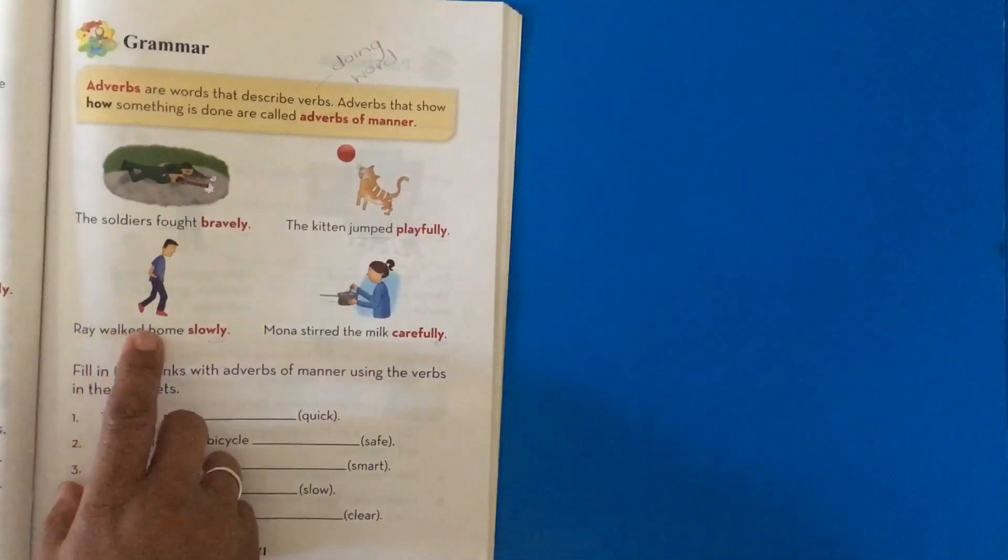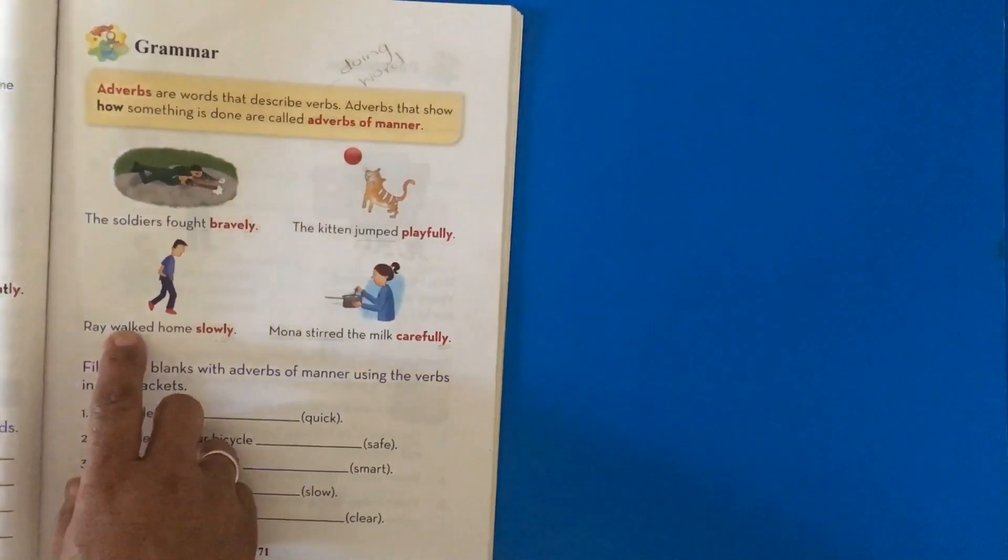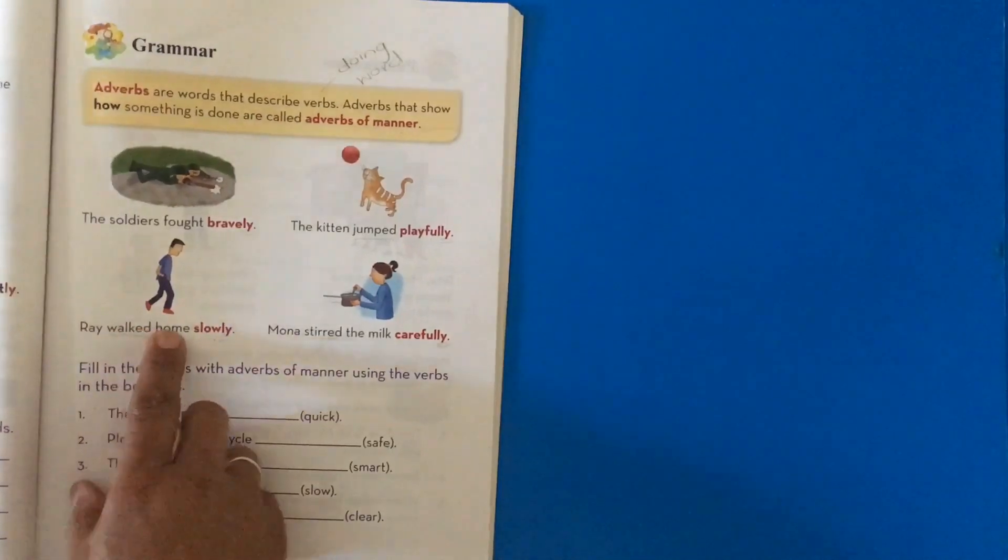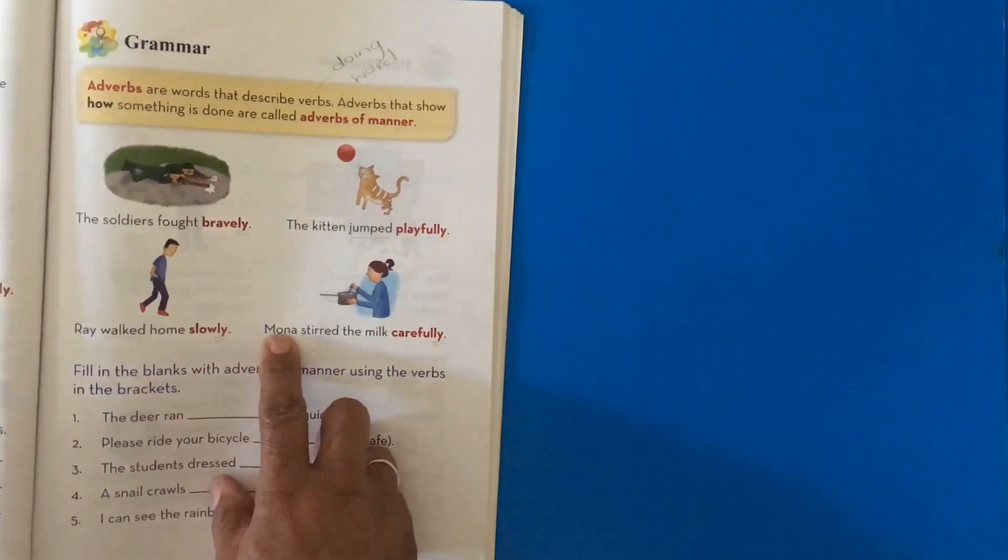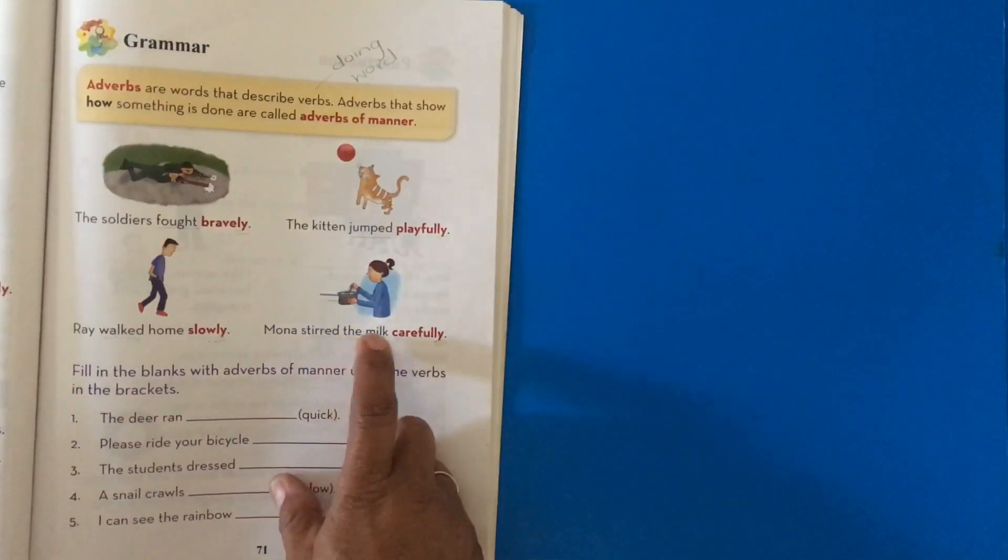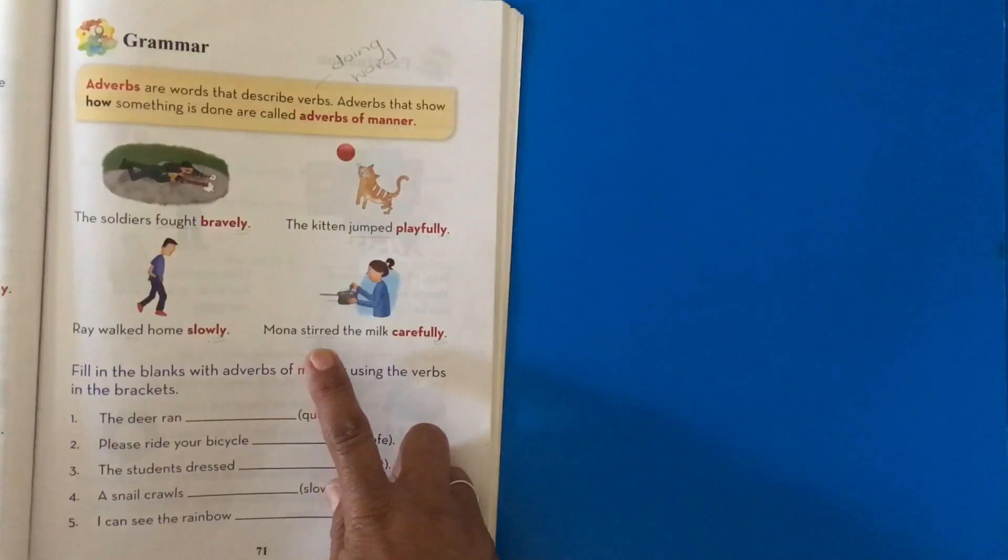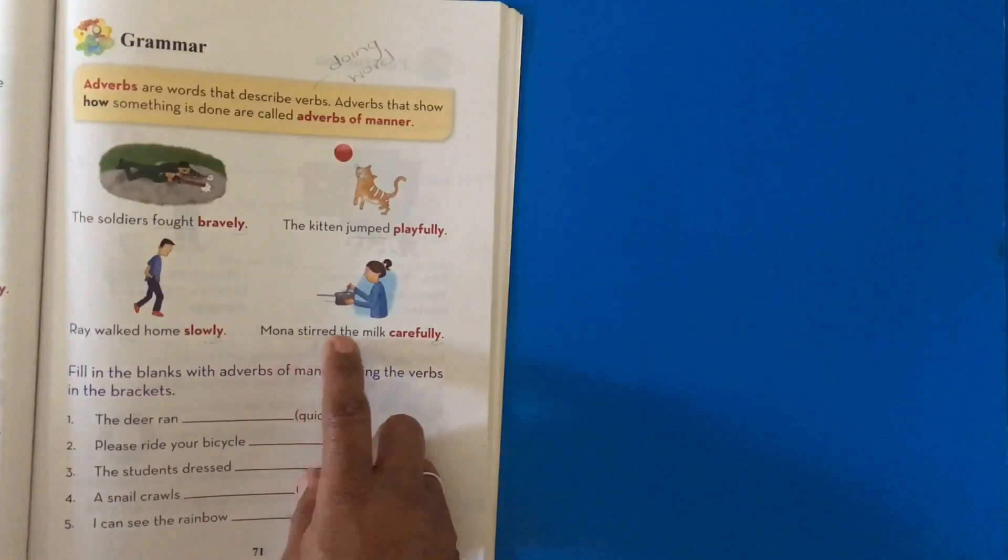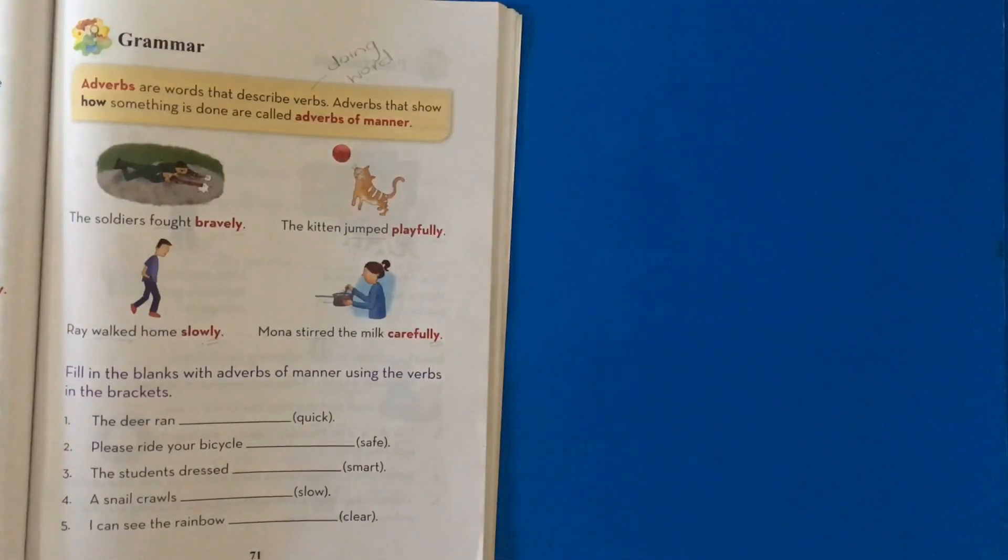Ray walked home. How did Ray walk home? Ray walked. Verb. Home slowly. Mona stirred the milk carefully. How did she stir the milk? She stirred the milk carefully.